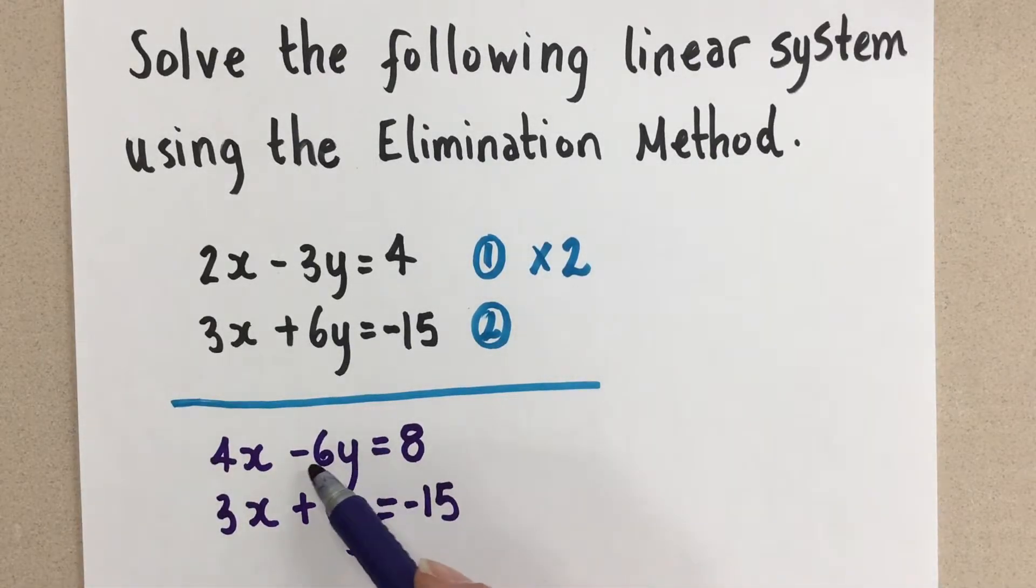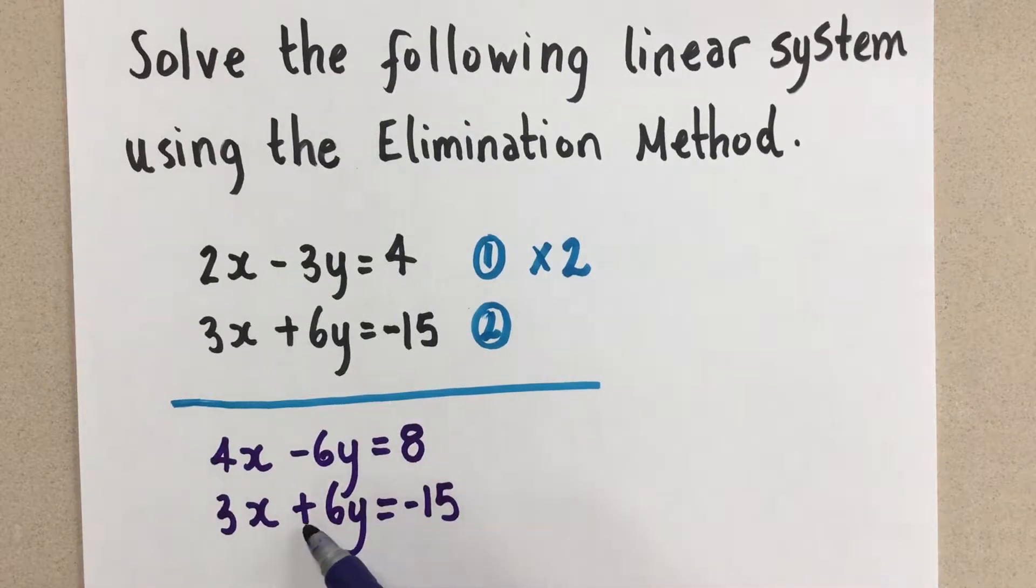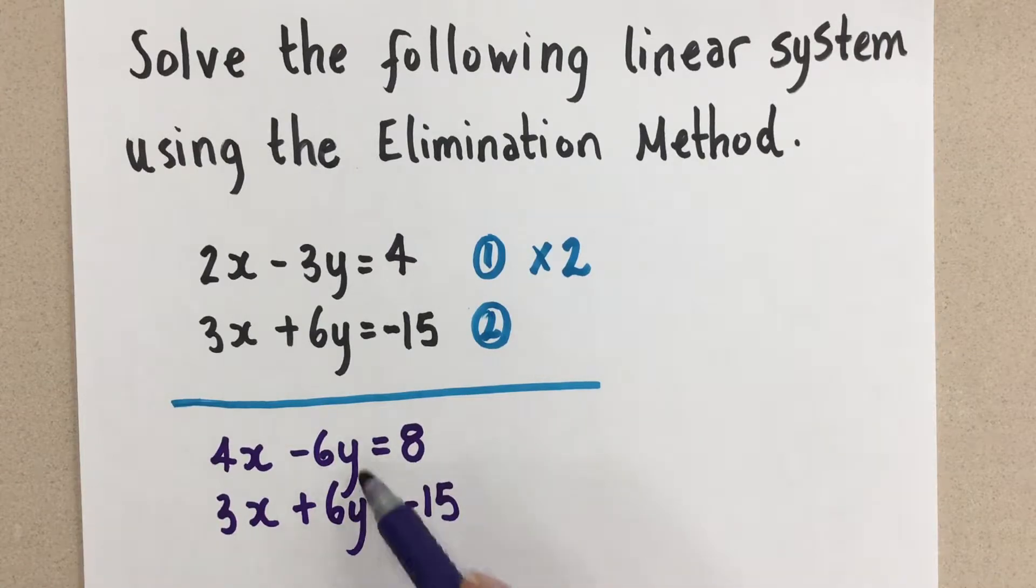This y term has a negative, and this y term has a positive. If I want to eliminate the y term, I can add these two together, and I'll get 0. Because negative 6y plus 6y gives me 0.